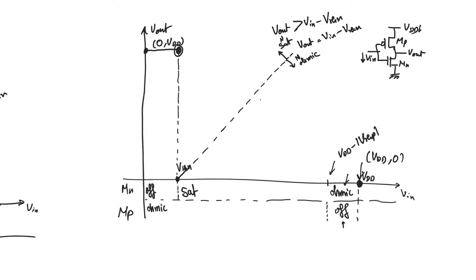Similarly, the PMOS is going to turn on when the input falls below VDD minus |V-threshold-P|. At this point the VTC is going to rise, but it's going to be continuous, starting at a very low potential. This means the PMOS also starts in saturation, because V-output — which is the drain of the PMOS — starts at ground, so VDS for the PMOS is going to be minus VDD, which is a hugely negative VDS, and that's enough to cause the PMOS to saturate.